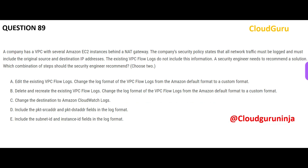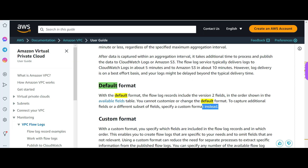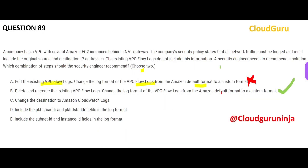The next question is about VPC flow logs. You want logs with specific custom fields and need to choose two answers. Option A says edit the existing VPC flow logs — but by default, VPC flow logs use the Amazon default format. As the documentation clearly states, you cannot customize or change the default format. So option A is wrong and option B is correct: you must delete the existing VPC flow logs and recreate them, changing the log format from Amazon default to custom format.